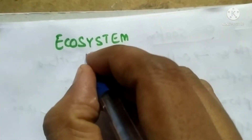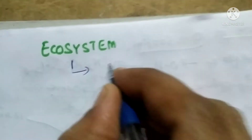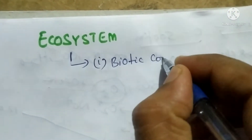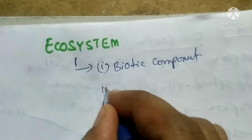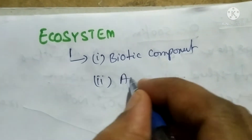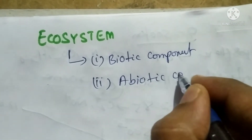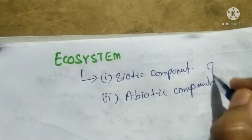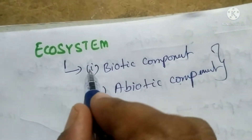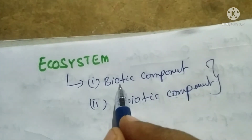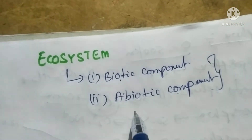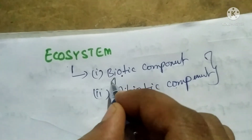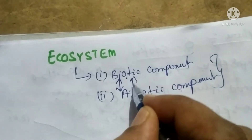The ecosystem is mainly composed of two components. One is the biotic component and the second one is the abiotic component. These two together are known as the ecosystem. The interrelationship between the biotic component and abiotic component in the environment is called the ecosystem. In these two components, energy and matter is transferred.